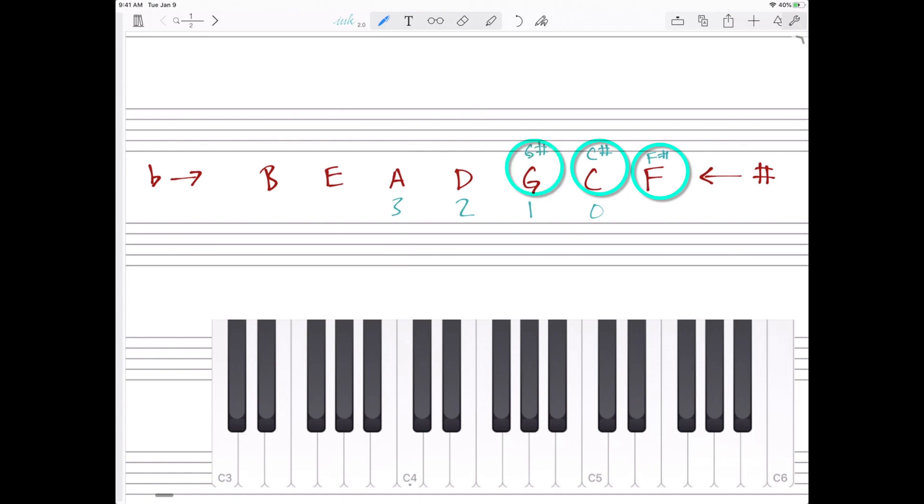The key of E has four sharps: F sharp, C sharp, G sharp, and D sharp. This pattern continues. B has five, and we add an A sharp.